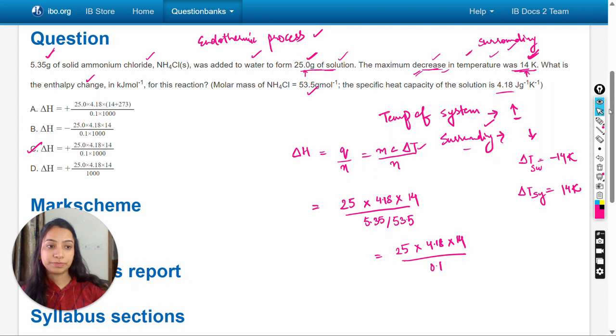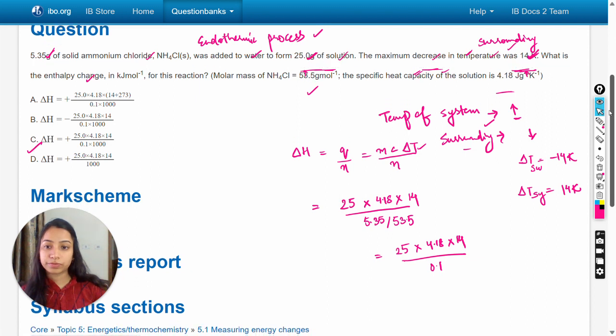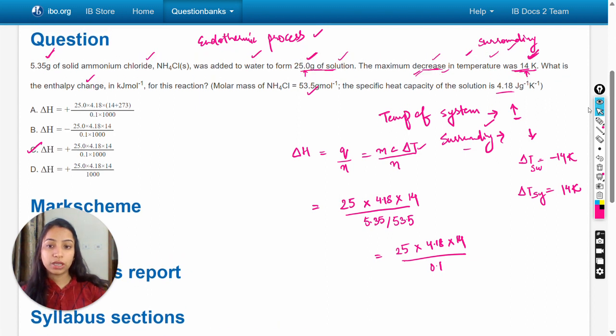So according to our observation answer will be c option. So let's check the mark scheme. Sorry, here we have to see that the answer should be in kilojoule per mole, which means here the specific heat capacity is in joule per gram per Kelvin, so here below there should be thousand. So now the answer is c option. Let's check the mark scheme.